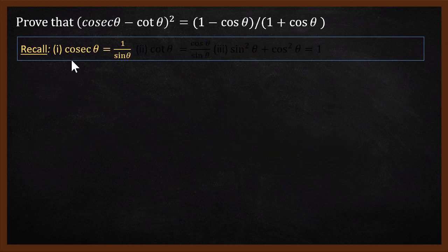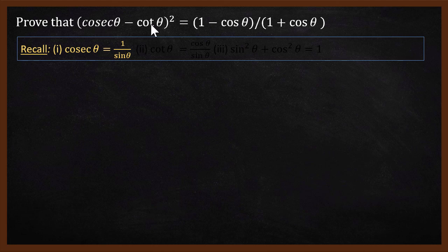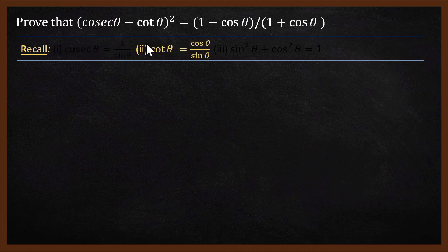Let us look at the definitions and the identities. First, cosecant theta is 1 by sin theta — this is one of the definitions we will use. The left-hand side has cosecant theta and cot theta. We will substitute them with sin and cos: cosecant theta becomes 1 by sin theta, and cot theta becomes cos theta by sin theta.